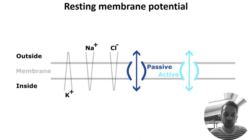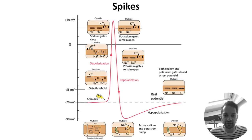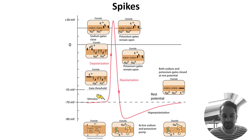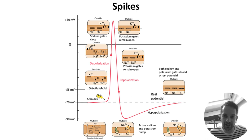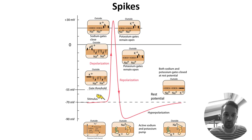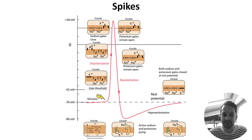The resting potential is the neuron's state when it has little or no input. But when it receives inputs, it can generate spikes. This schematic shows time on the x-axis on the order of a few milliseconds and the neuron's membrane potential on the y-axis in millivolts. Inputs cause sodium channels in the membrane to open and sodium to flow into the cell down its concentration gradient. This raises the membrane potential, and if it rises high enough past what is termed the gate threshold, voltage-gated sodium channels open, more sodium flows in, and the membrane potential rises to its peak. This process is termed depolarization.